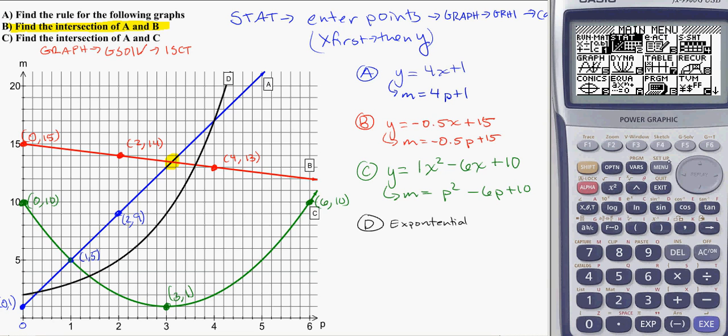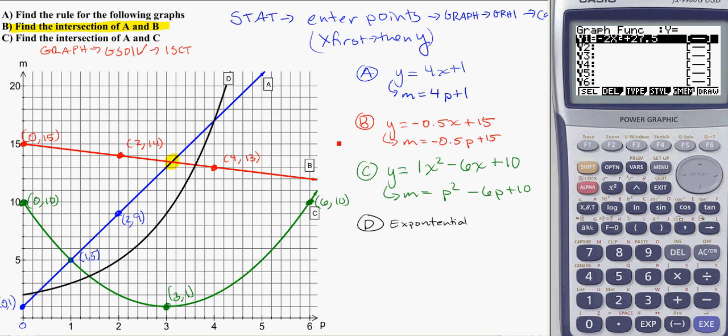So, in Graph, so menu, get to Graph, I'm going to enter in my two rules. So for line A and line B, I'm going to have 4X plus 1, and for the second one, negative 0.5X plus 15. Enter. Draw it.